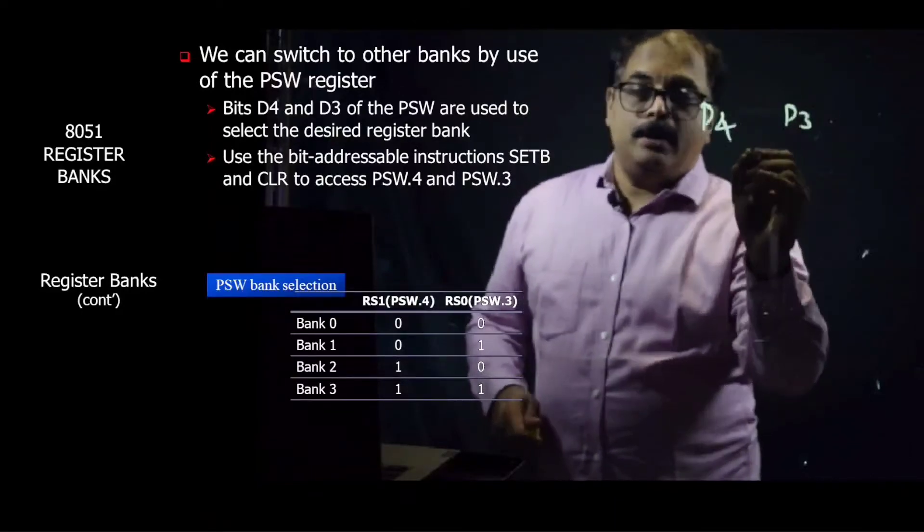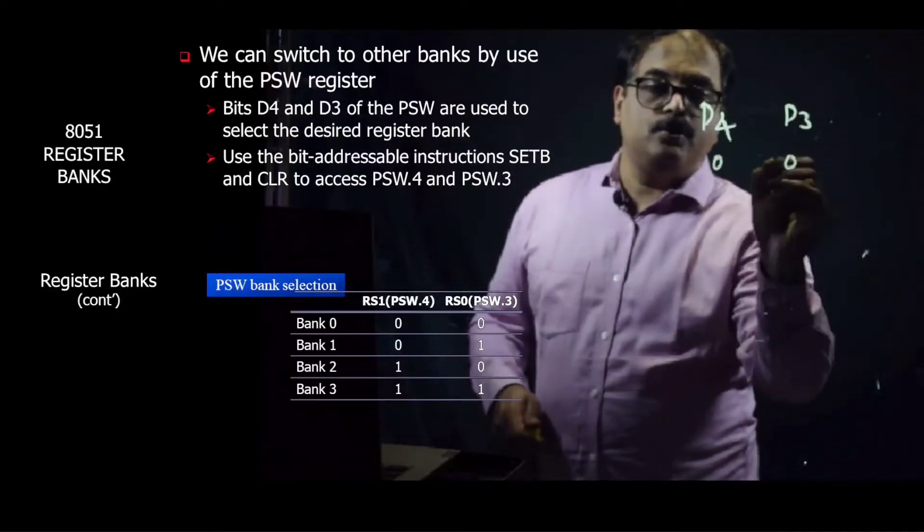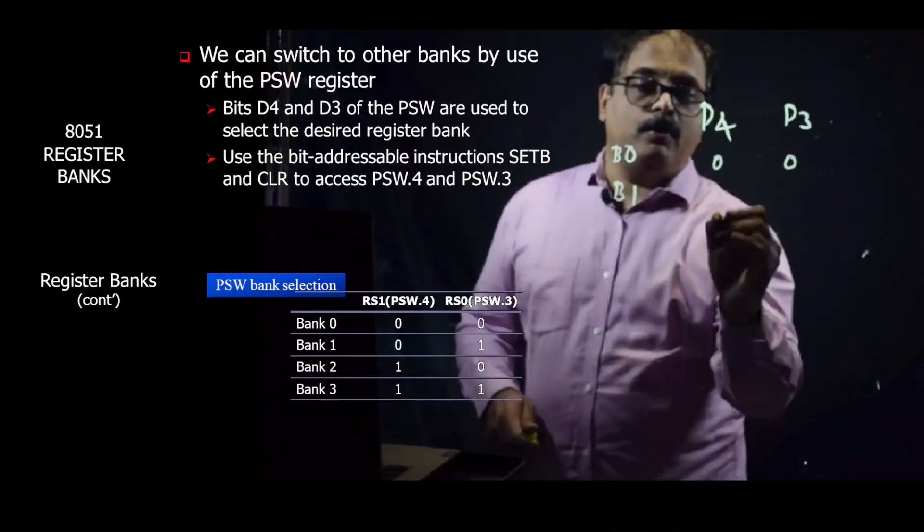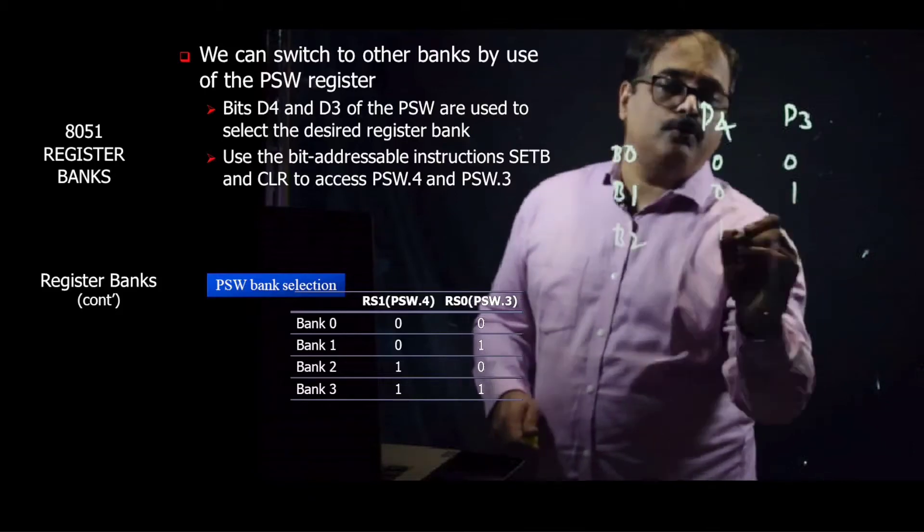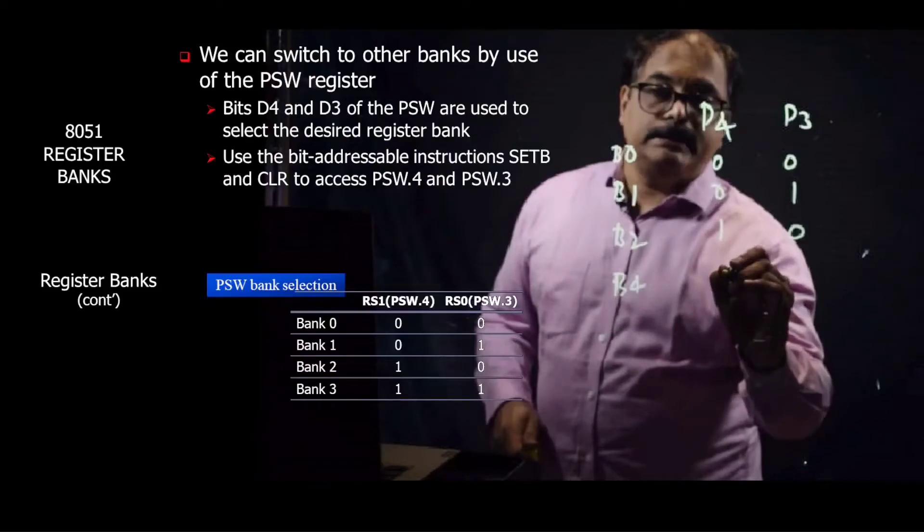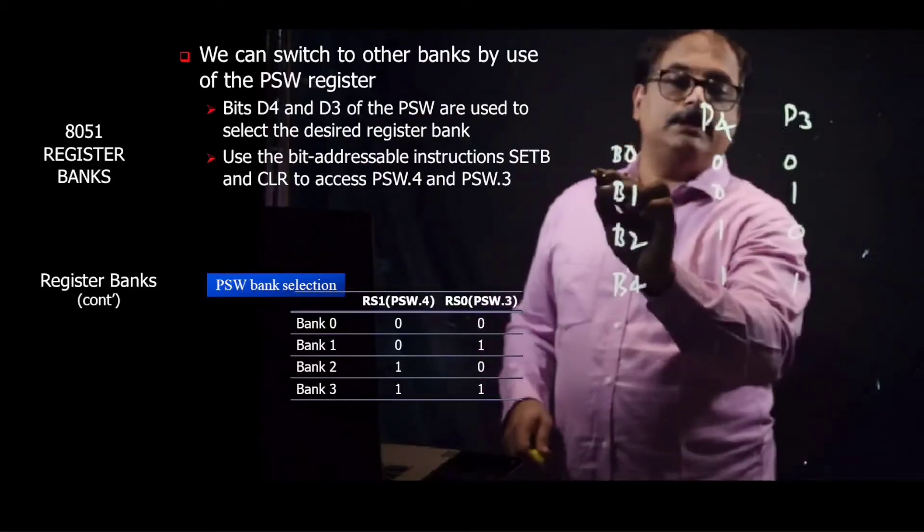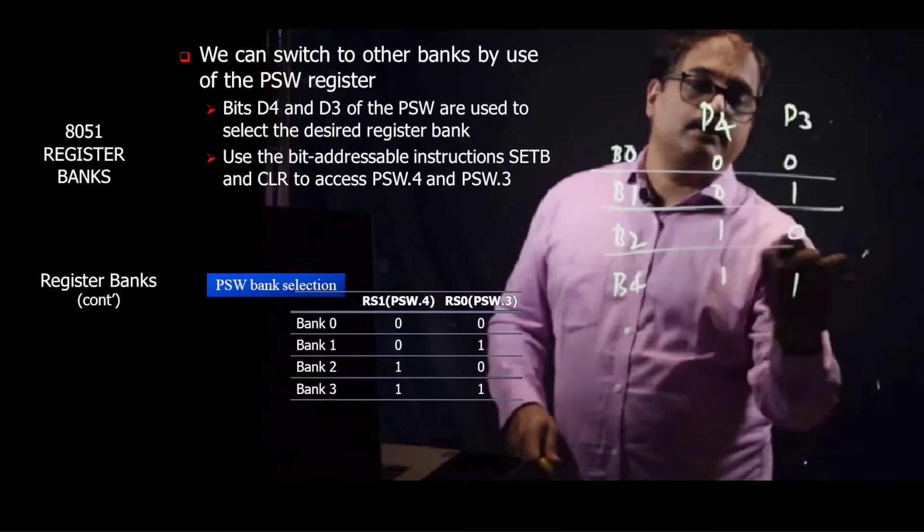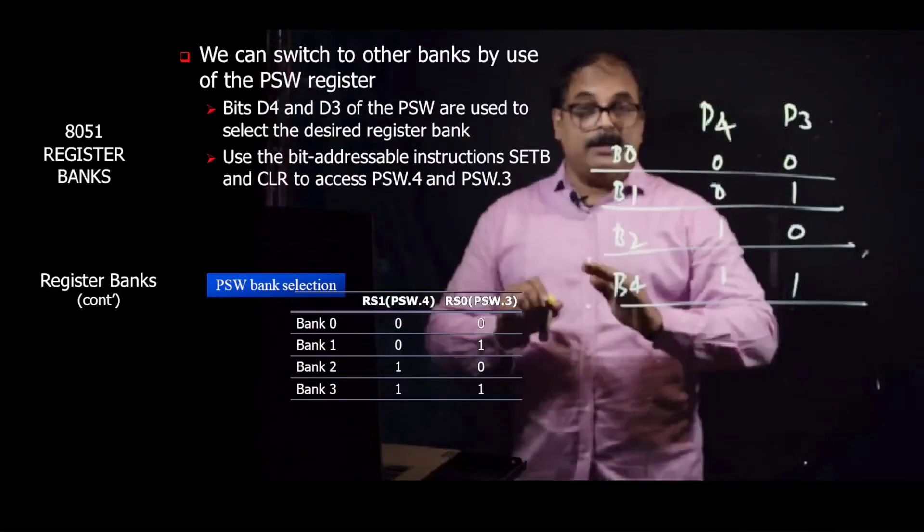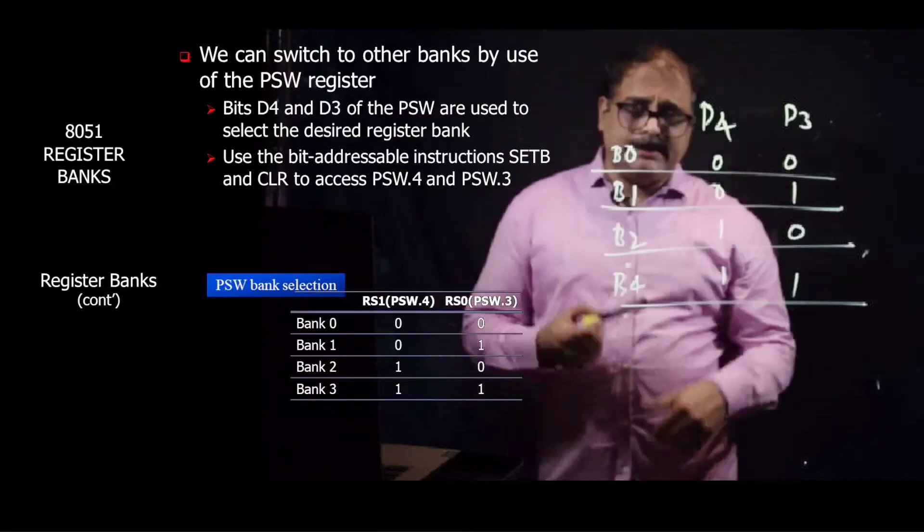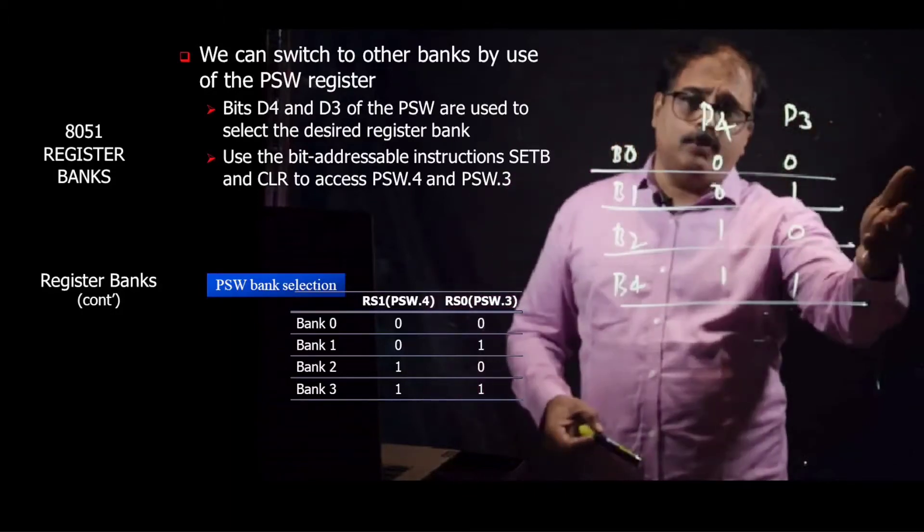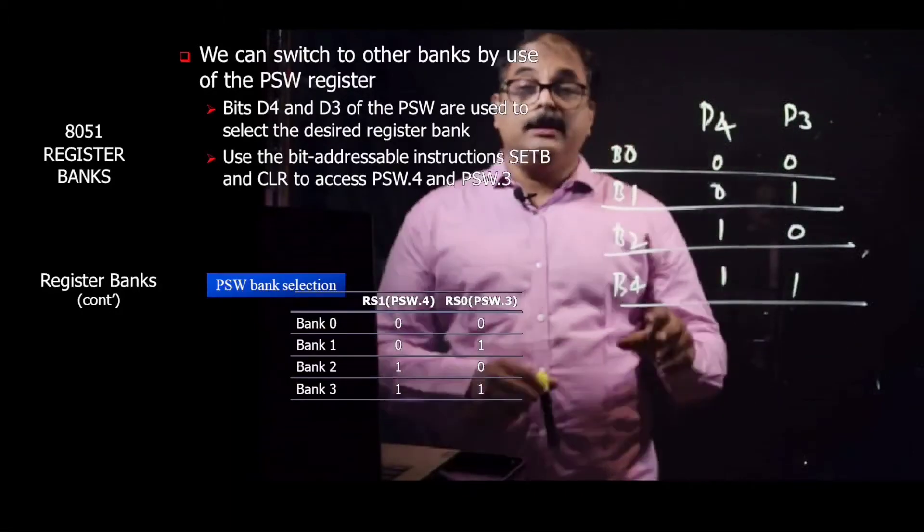If you want to go for bank 1 it is 01, if you want to go for bank 2 it is 10, and if you want to go for bank 3 it is 11. So you can program these bits and accordingly you will be able to select a particular bank. You can use simple instructions such as SETB PSW.3 and PSW.4 and using this you can select a particular bank.